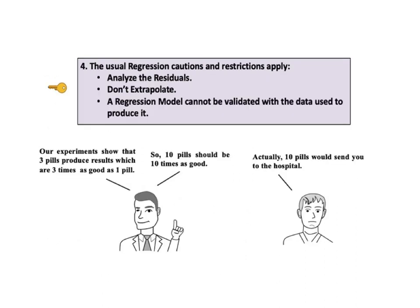The fourth and final key to understanding tells us that the usual regression cautions and restrictions apply. First, analyze the residuals. This will be explained in a separate video. But briefly, residuals represent the error in the regression model. That is the variation of the variable Y which is not explained by the model. Residuals must be analyzed to ensure that this variation is not explainable by any other factors not included in the model.